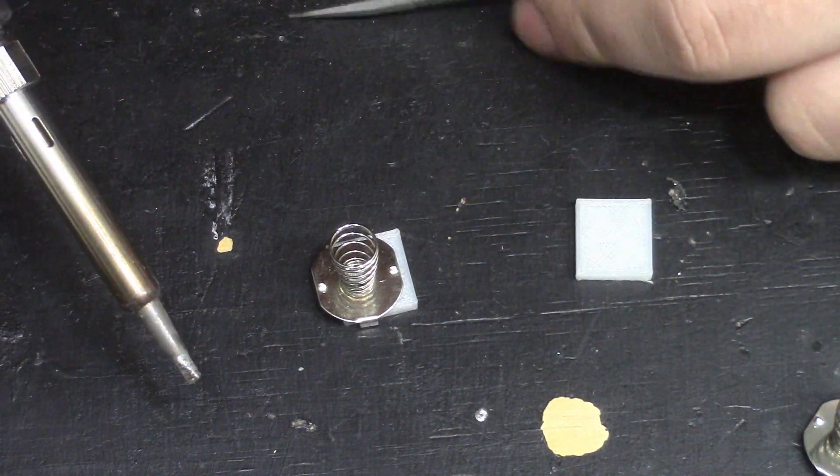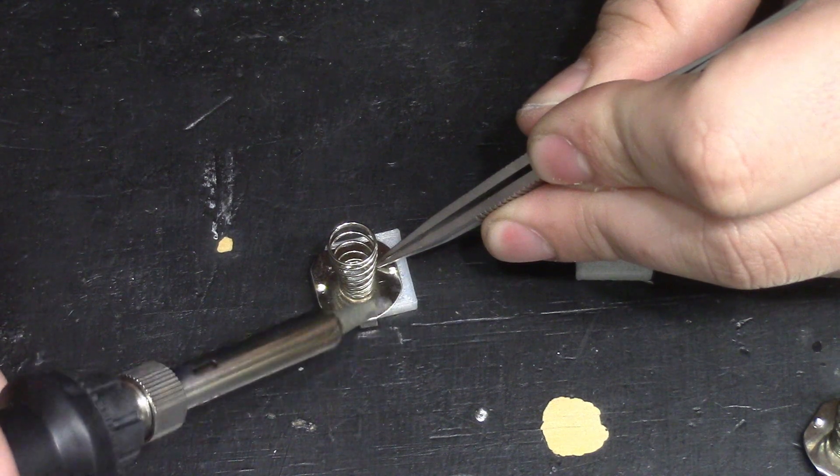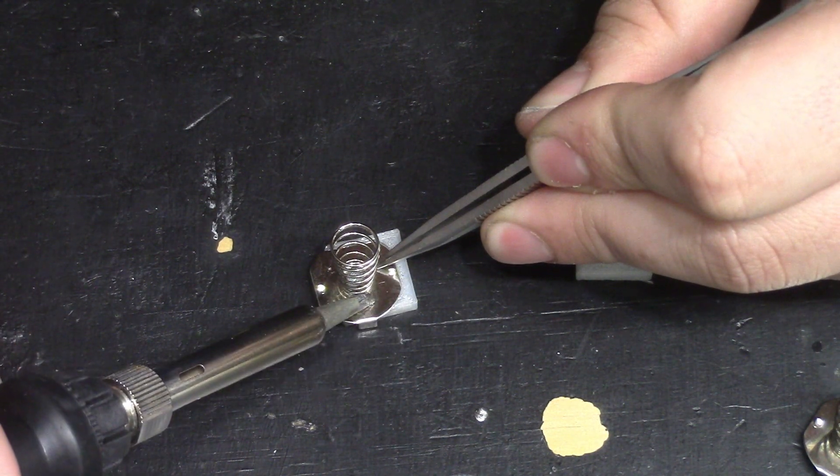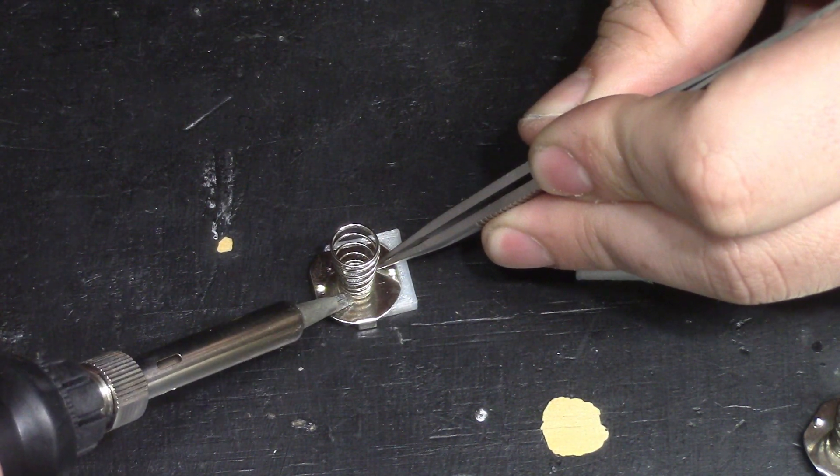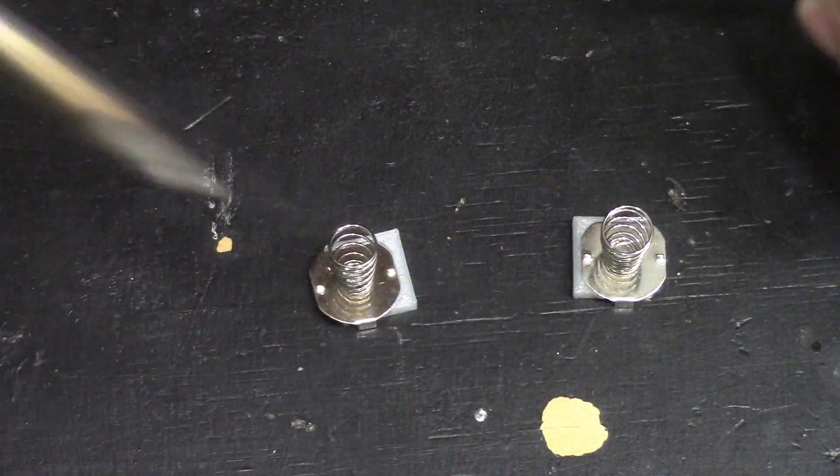When it came to the contacts, I messed around with a few ideas, but I finally landed on heating up the metal contacts while on the plastic biscuits to melt them into place. This actually worked a lot better than I expected, and once they were done cooling down, I epoxied the biscuit contacts into place.